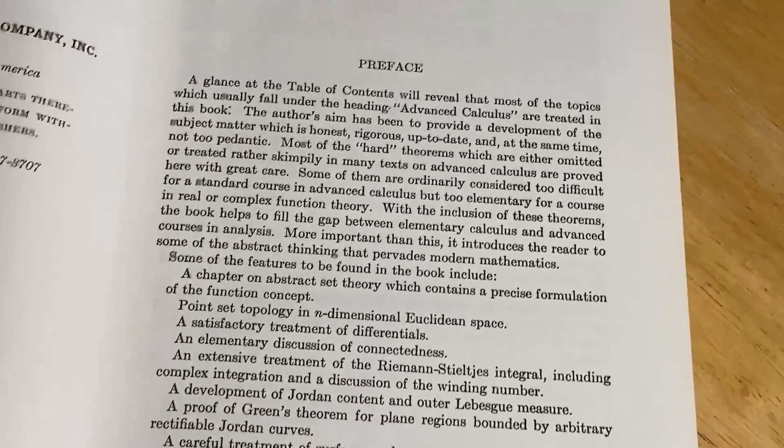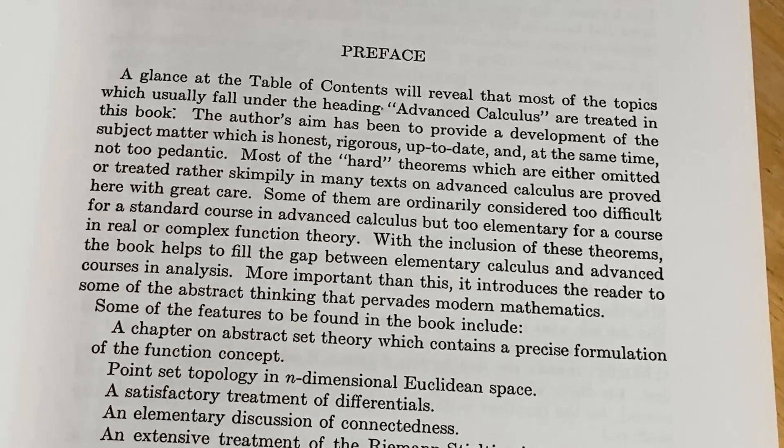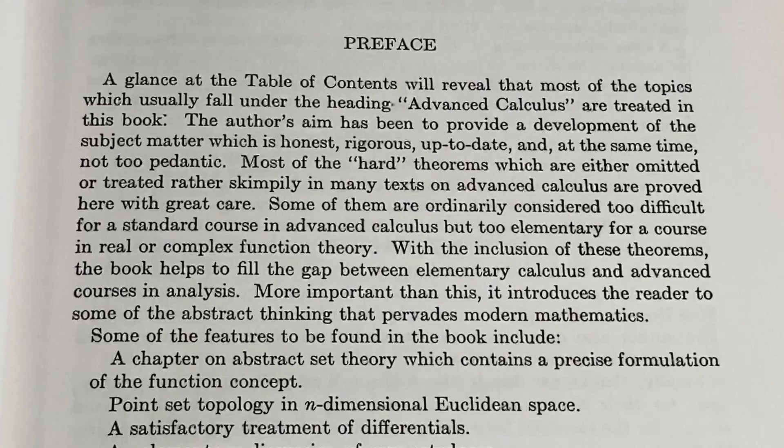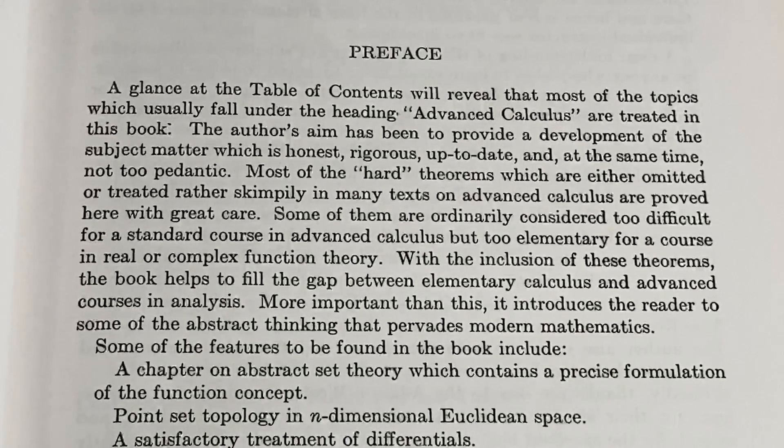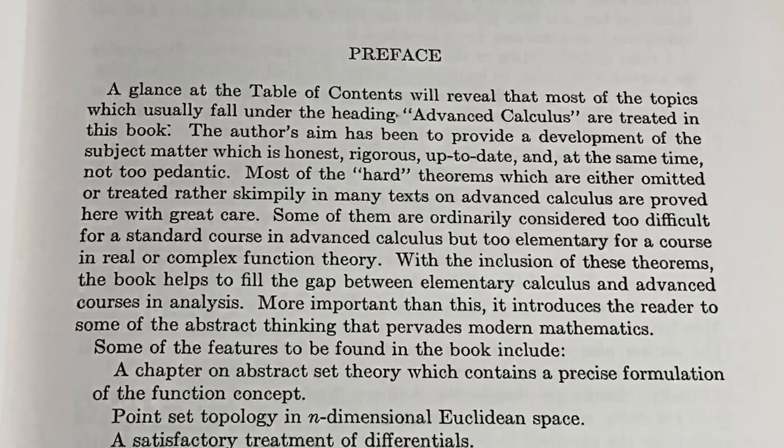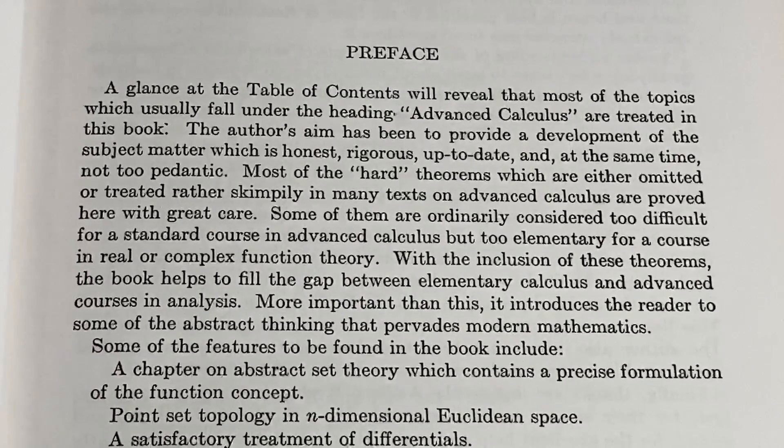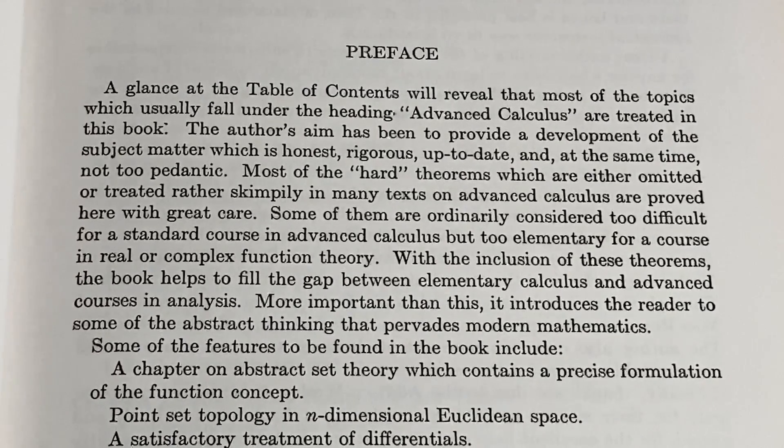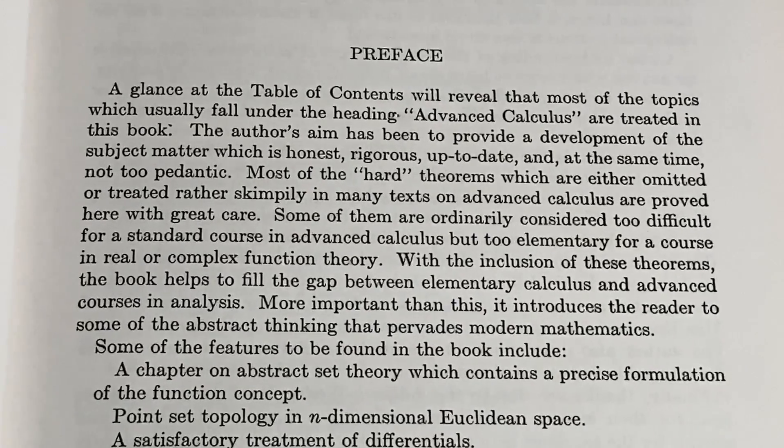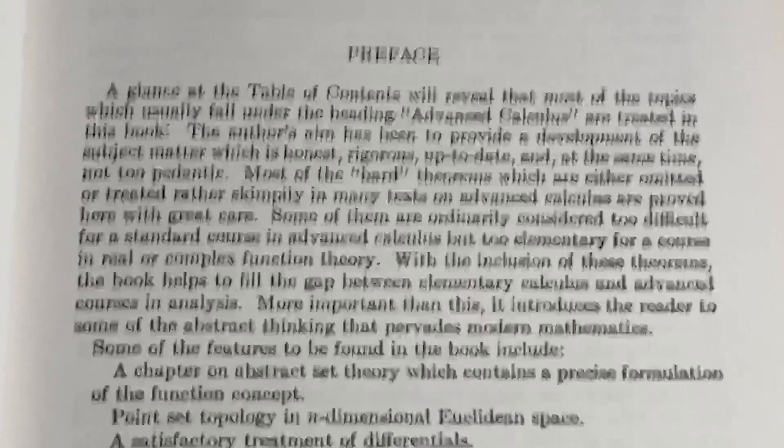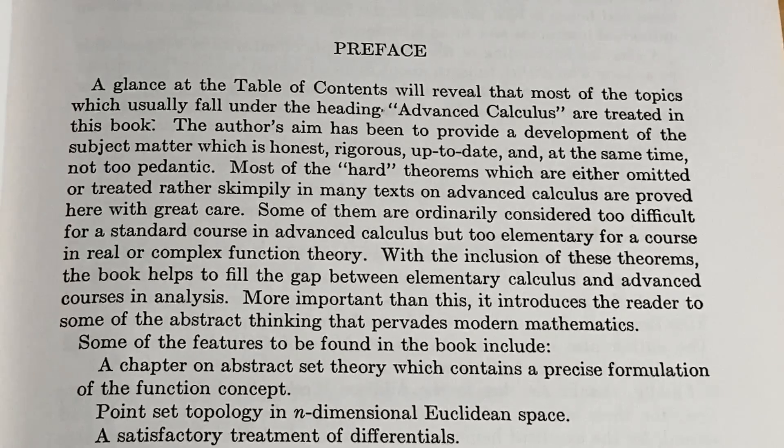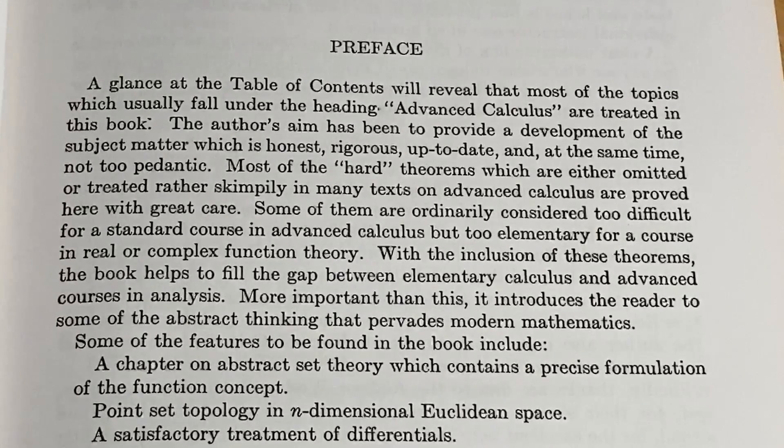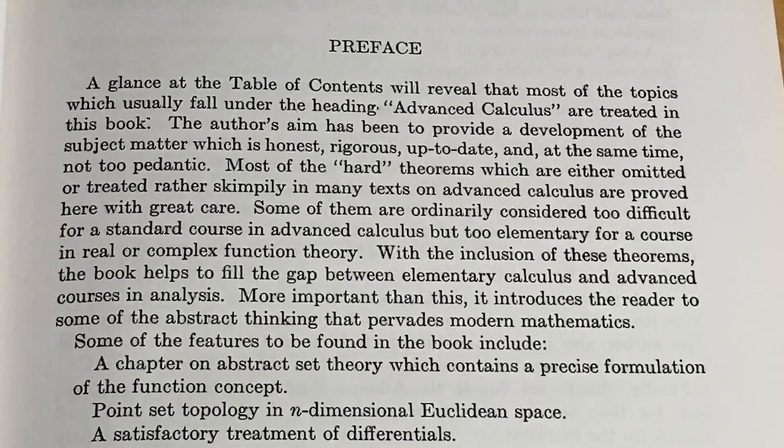Let's take a look here at the preface. Usually these are pretty interesting, actually, and especially in these older books. I feel like in a lot of the newer books, they do spend a lot of time explaining the changes and stuff like that because they do have multiple changes. But here it says, a glance at the table of contents will reveal that most of the topics which usually fall under the heading Advanced Calculus are treated in this book. The author's aim has been to provide a development of the subject matter which is honest, rigorous, up-to-date, and at the same time not too pedantic.